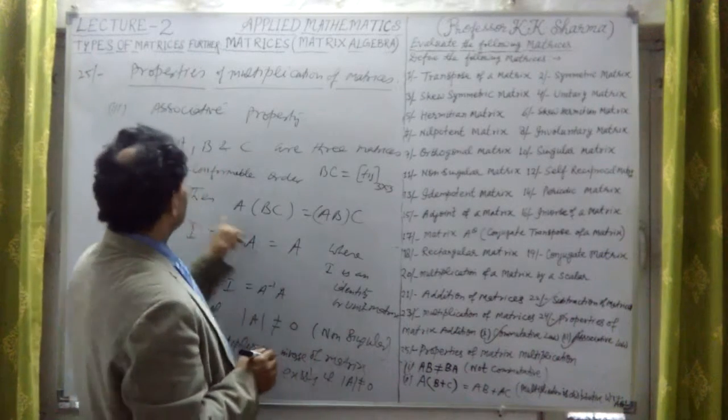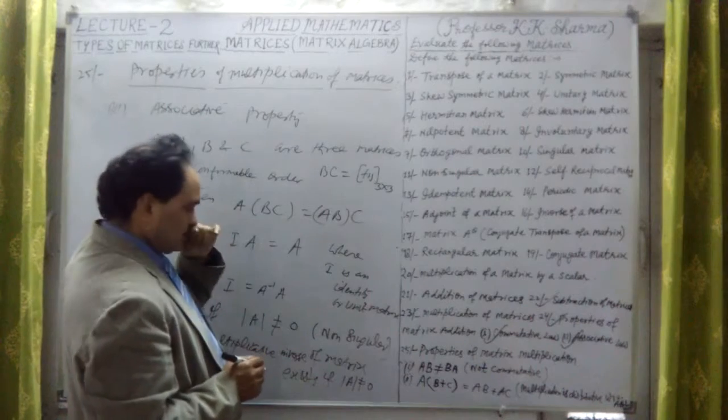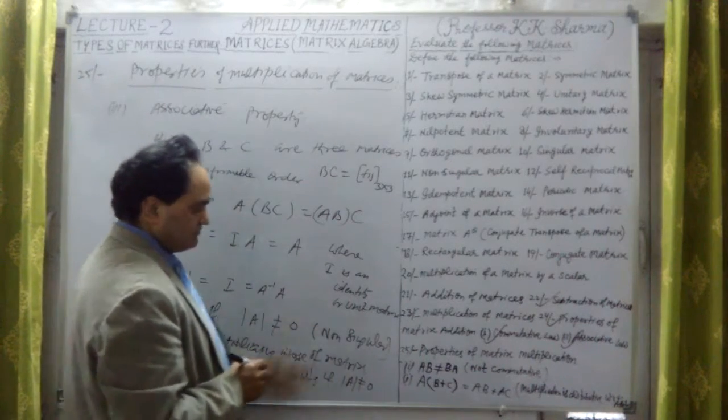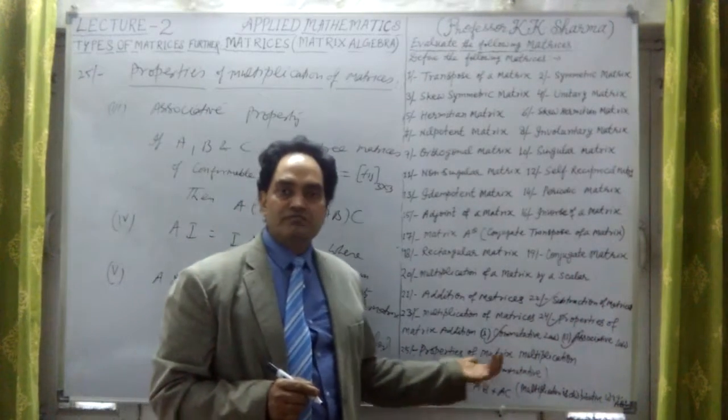This is the unit matrix property. Fourth, third, second, first - we have taken all five properties of matrix multiplication.